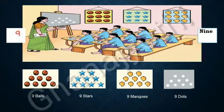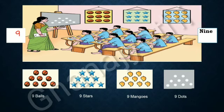Now look at this picture and read the number. In this picture, we can see there are 9 balls, 9 stars, 9 mangoes, 9 dots. The things which we can see in this picture contain 9 in number.